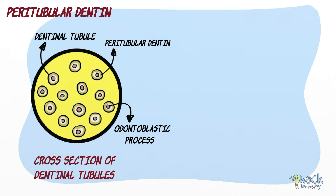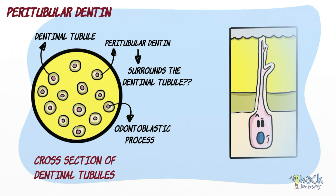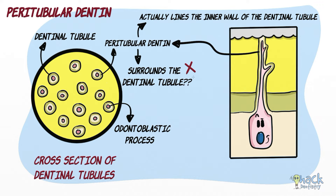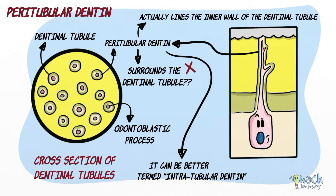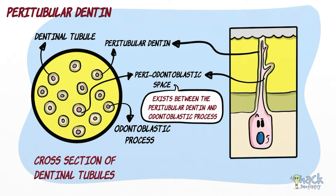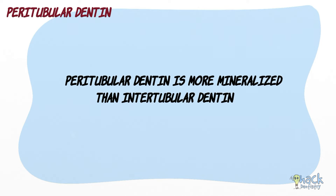Peritubular dentine is that portion of the dentine surrounding the dentinal tubule. Ironically, peritubular dentine does not actually surround the tubule but rather lines the inner wall of the dentinal tubule; hence it may be more appropriately termed intratubular dentine. The periodontoblastic space in the dentinal tubule exists between the peritubular dentine and the odontoblastic process. Peritubular dentine is more mineralized by at least 5 to 12% than the intertubular dentine.